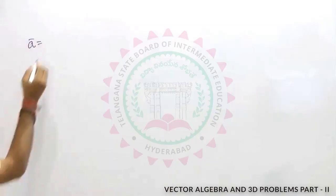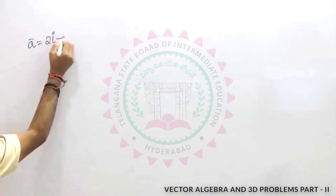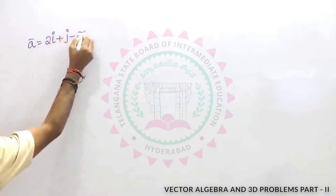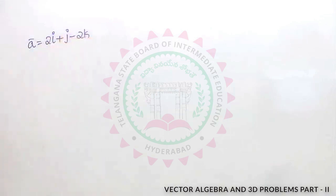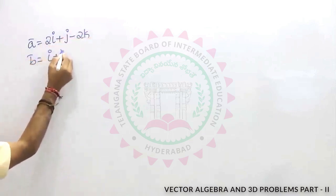a bar is equal to 2i plus j minus 2k, b bar is equal to i plus j.